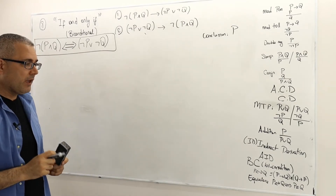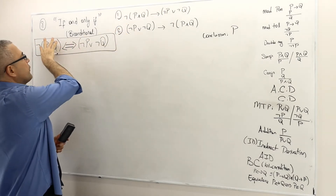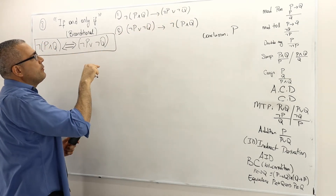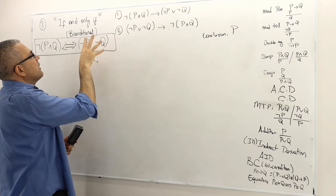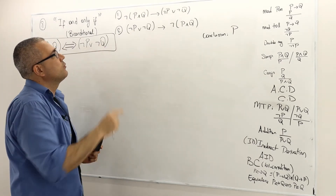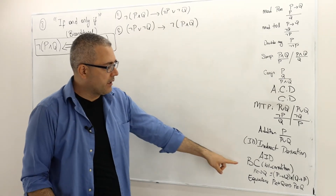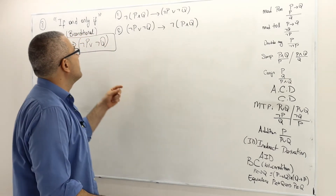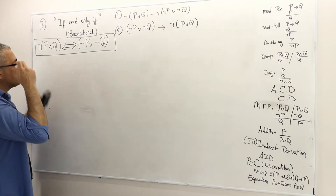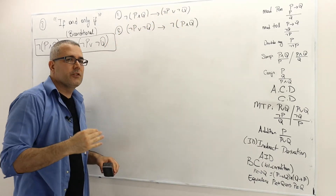Because this is a biconditional sentence, we first need to prove that the first part — not P and Q — implies the second part. Then we prove the second part implies the first part. Once we prove both, by the biconditional property rule, we can say the theorem is true. I'm going to prove the first part first using conditional derivations.